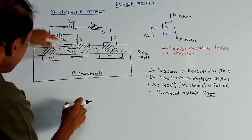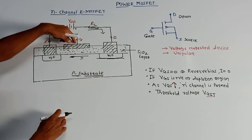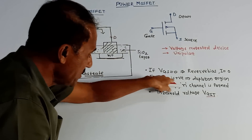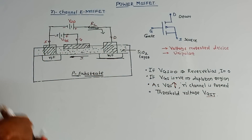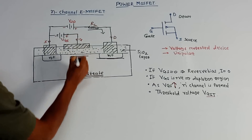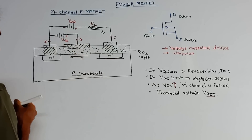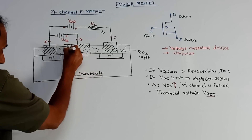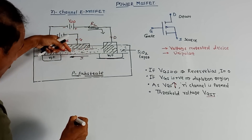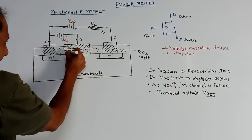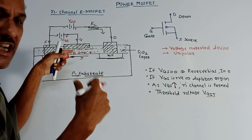After that, we will connect VGS. If VGS is positive, there will be formation of a depletion region. Here is the positive connection. In the P-type substrate there are holes as well as electrons. Due to this positive connection, electrons will try to attract and move towards the gate terminal, whereas holes in the P-substrate will try to repel and move away from the gate terminal. So it will form the depletion region.